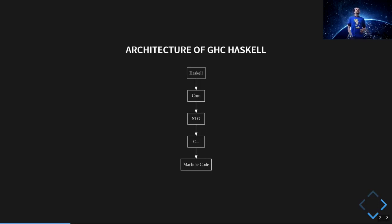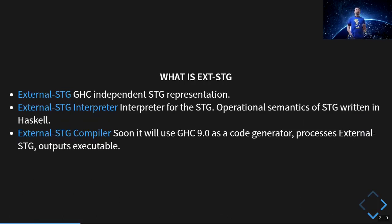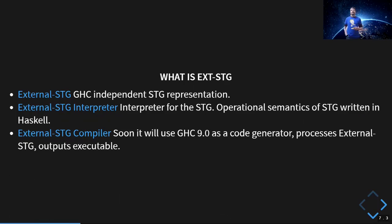Csaba used this pipeline and introduced the plugin between core and STG. External STG is a GHC-independent STG representation that is compatible with STG from the pipeline. It can also inject external STG back into the pipeline and use it as a code generator. The related projects are: the external STG project, the external STG interpreter, and the external STG compiler.